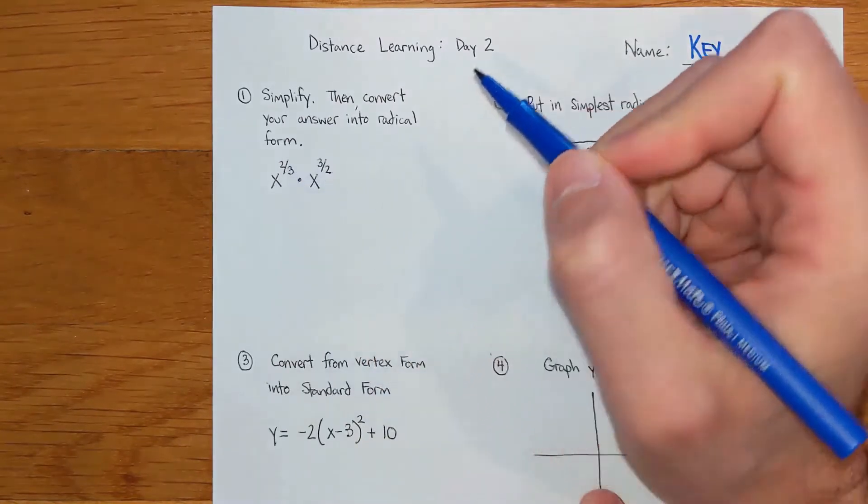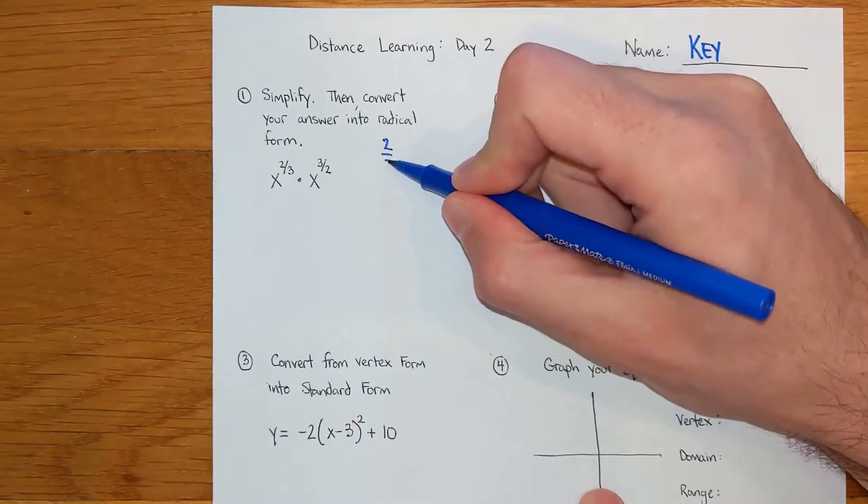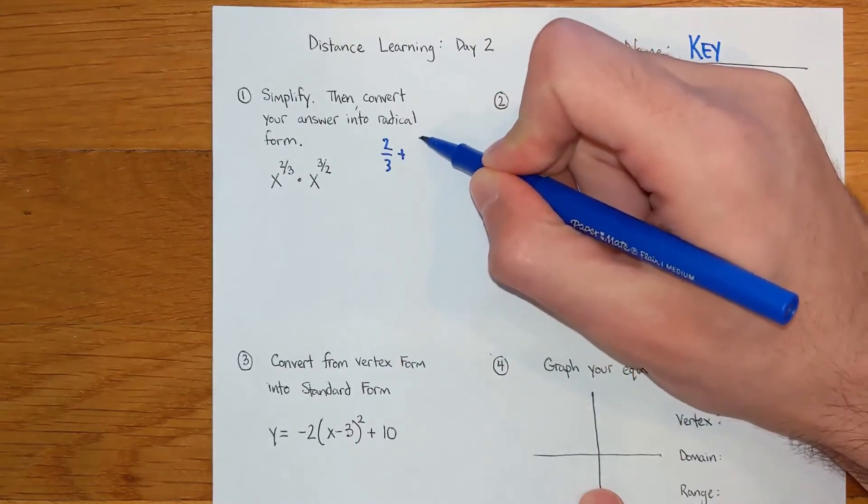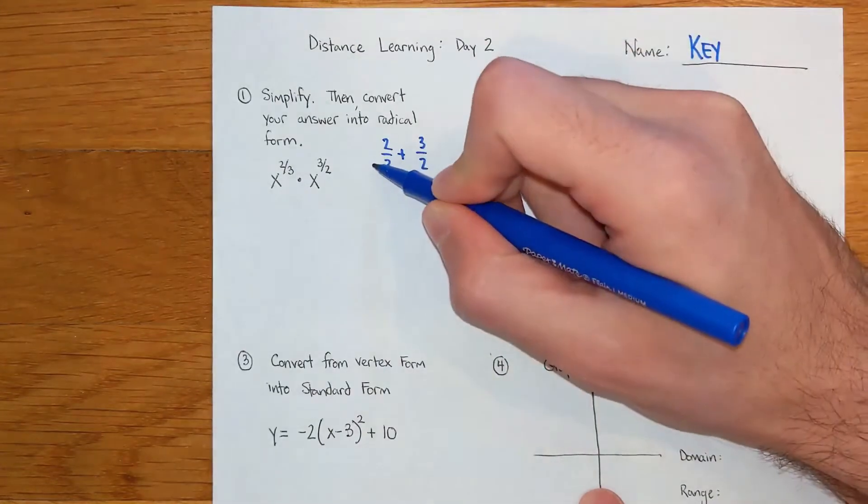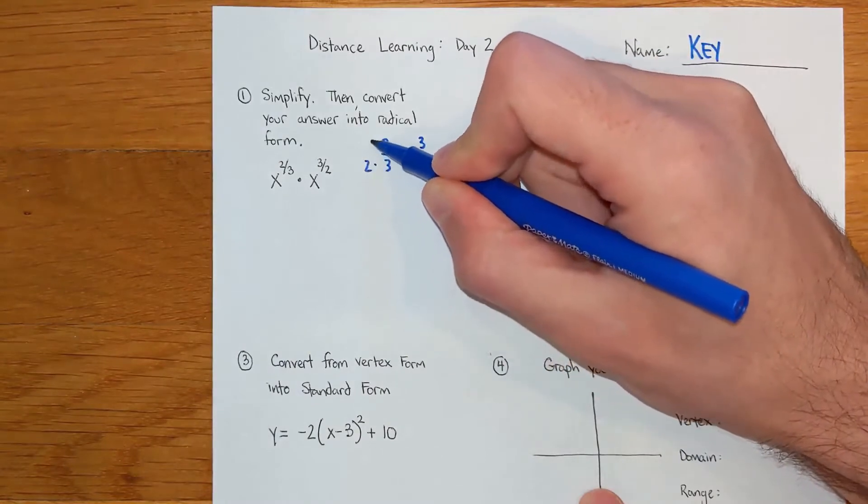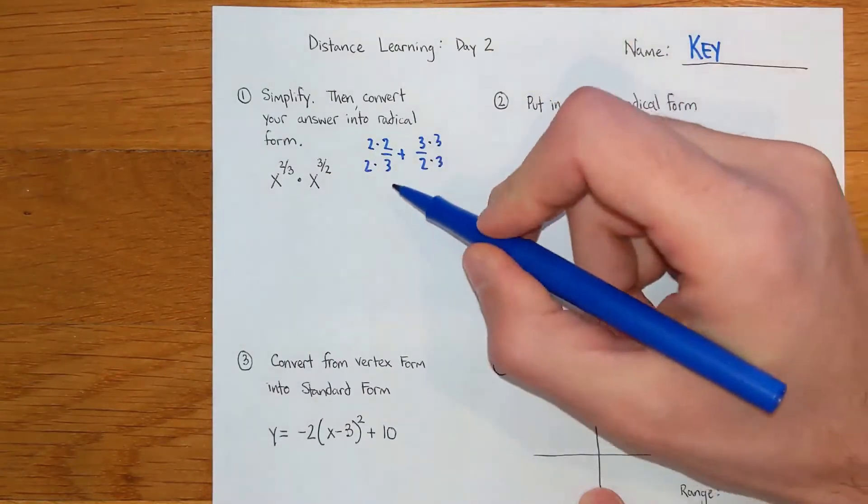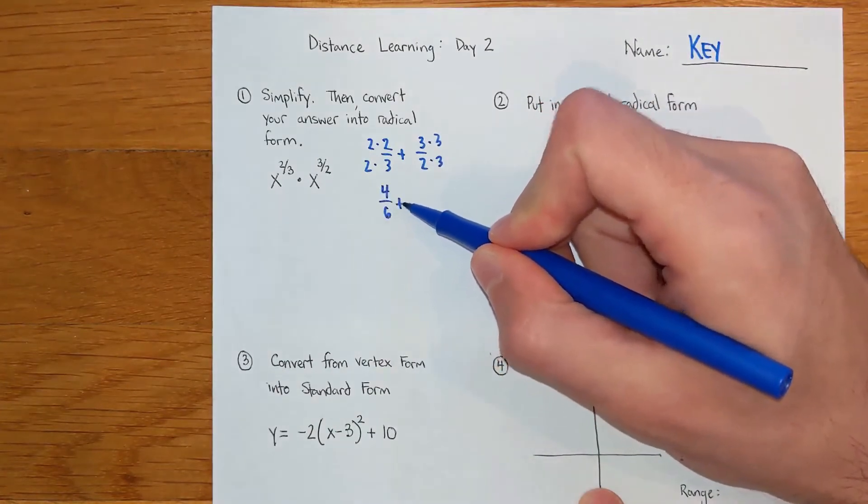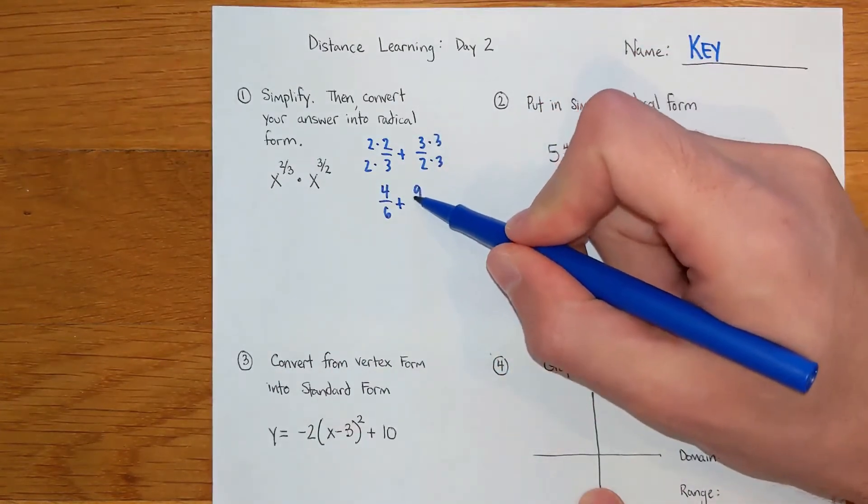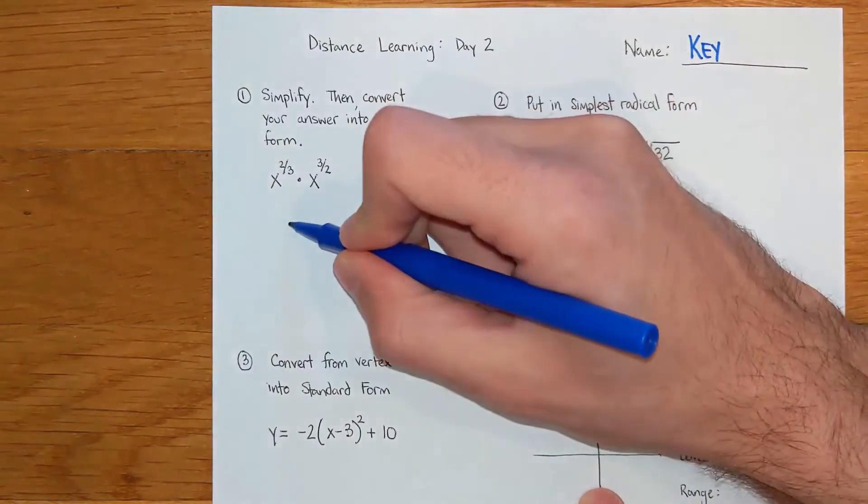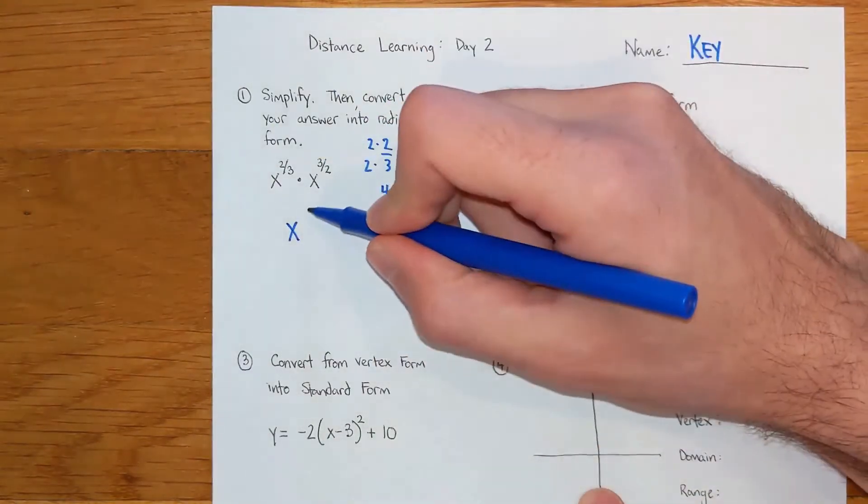But when you're adding fractions, you need to get a common denominator. So I'm going to make these both over six. This guy gets multiplied by two, this guy gets multiplied by three. We're looking at four over six plus nine over six.